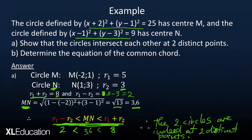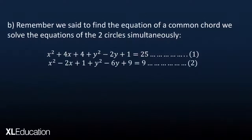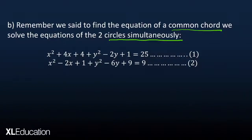Now let's go to question B, which asks us to determine the equation of the common chord. To find the common chord, we solve the two circle equations simultaneously. We use the elimination method, working with the expanded forms of the two equations: equation 1 from the first circle, and equation 2 from the second circle.